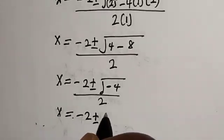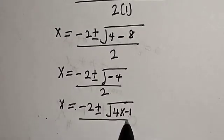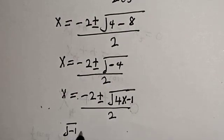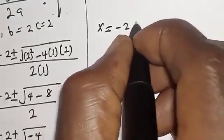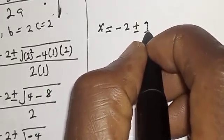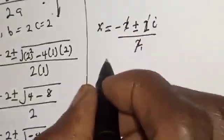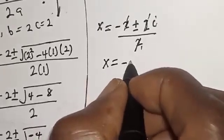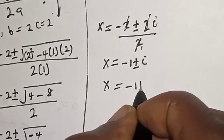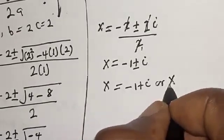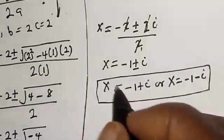Then x is equal to minus 2 plus or minus square root of 4 times minus 1, over 2. Remember that the square root of minus 1 is equal to i. So x is equal to minus 2 plus or minus 2i over 2, which simplifies — dividing through by 2 — to x is equal to minus 1 plus i or x is equal to minus 1 minus i.